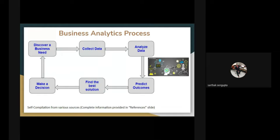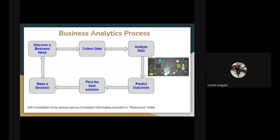The business analytics process flowchart shows: first, discover your business need; then collect some data; then analyze the data; then predict the outcomes; then find the best optimal solution; and then make a decision. It is a loop — for example, Apple has launched some of the best smartphones, but they continuously upgrade and relaunch versions because they need a continuous quality improvement mechanism to make sure everything is done properly.